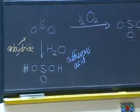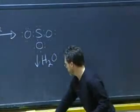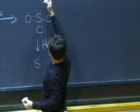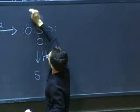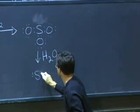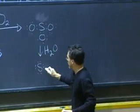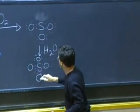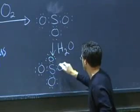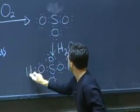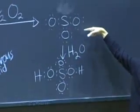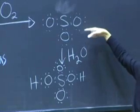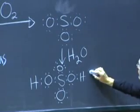Alternatively, when SO3 reacts with water — both SO2 and SO3, as they react with water, are going from a situation in which they are electron deficient to a situation in which the sulfur attains an octet. When SO3 reacts with H2O to give H2SO4, we have now got sulfuric acid.